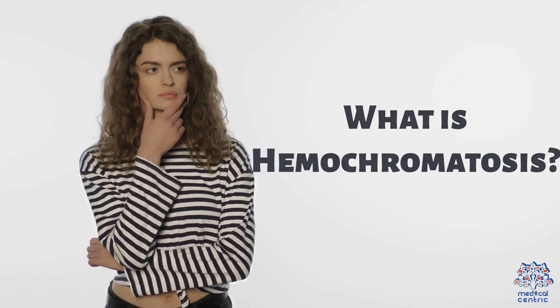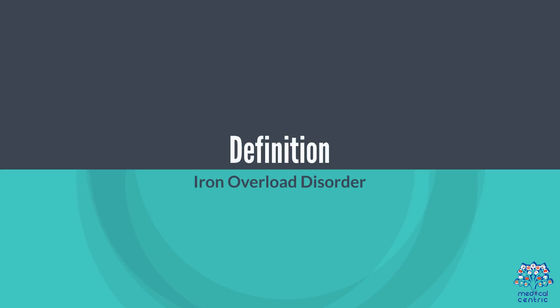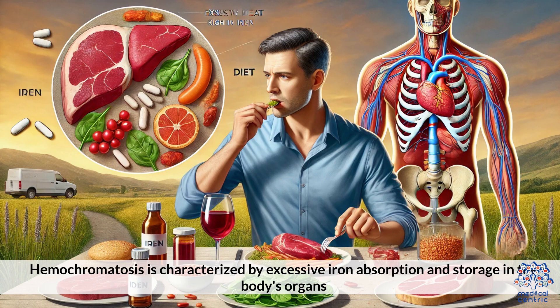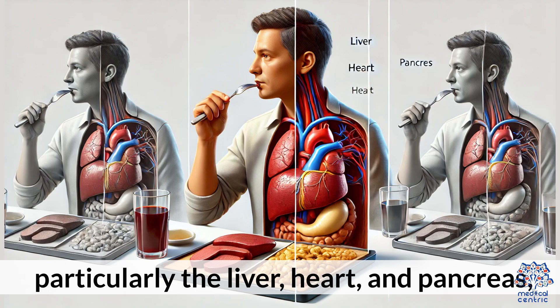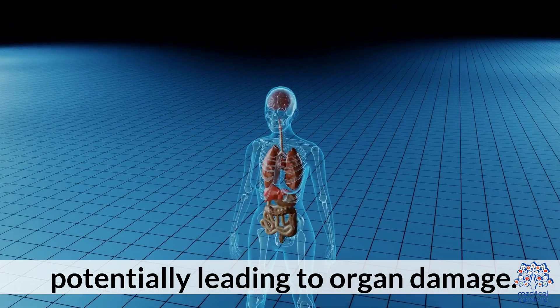What is Hemochromatosis? Definition: Iron Overload Disorder. Hemochromatosis is characterized by excessive iron absorption and storage in the body's organs, particularly the liver, heart, and pancreas, potentially leading to organ damage.